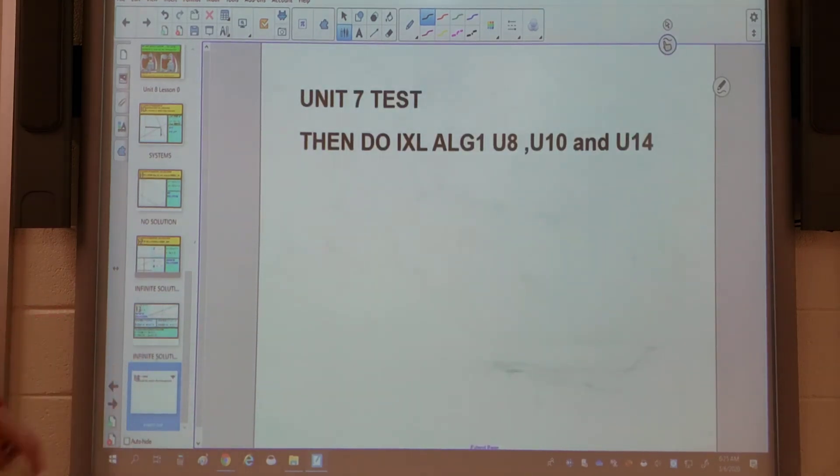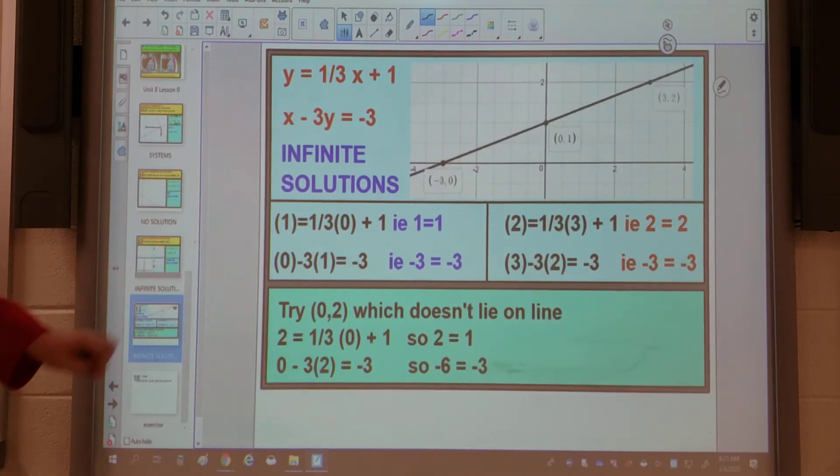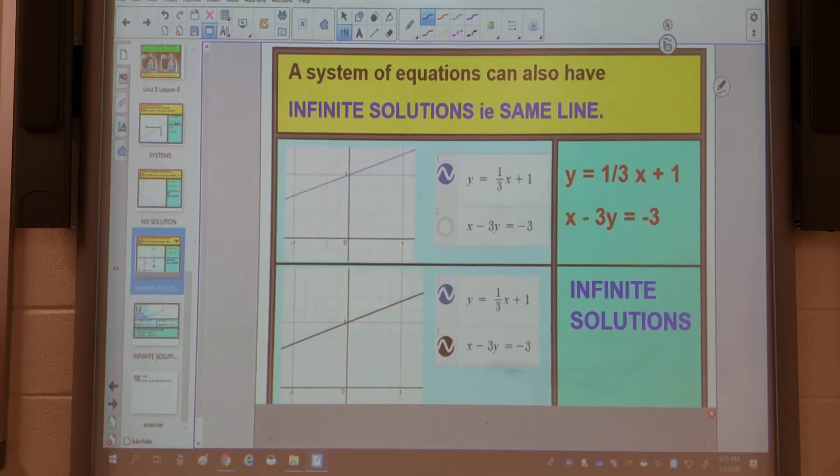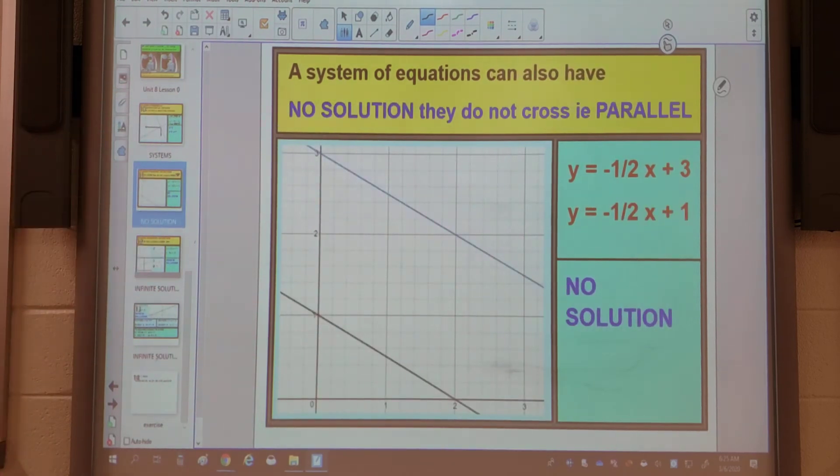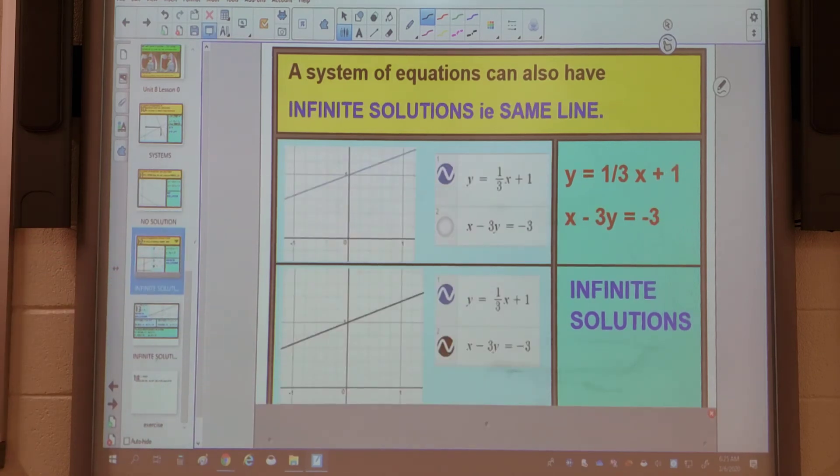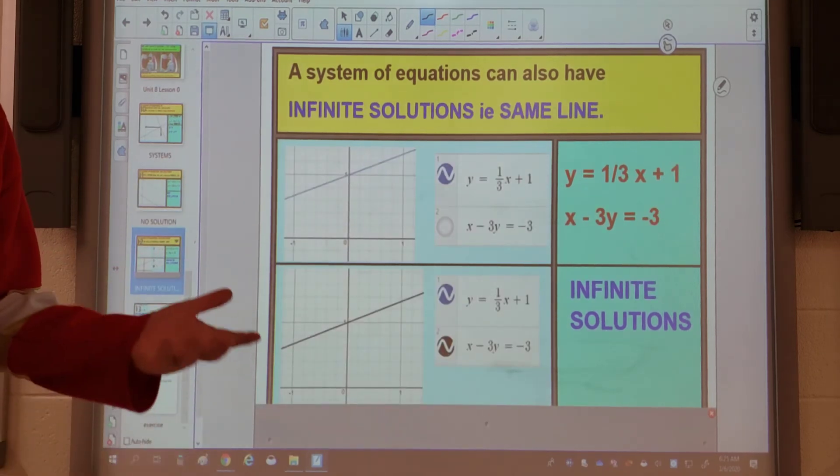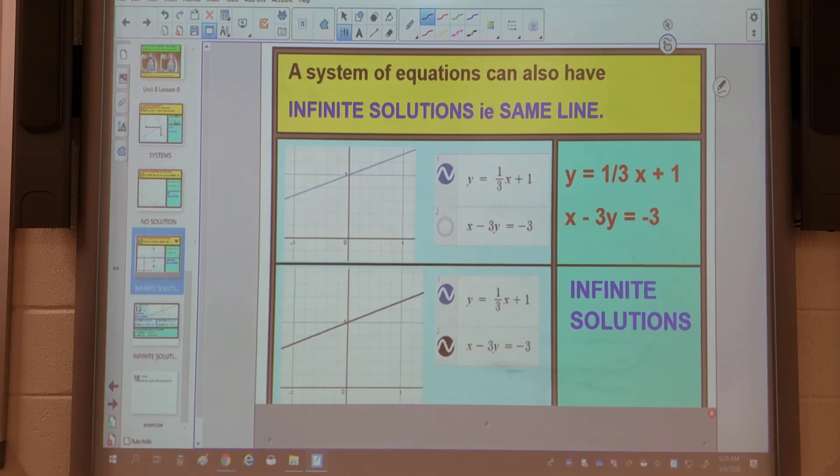Now when you go to do your IXL exercises, and I just clicked on the wrong screen there, you should be also using some of the certain vocabulary words that we use as well. So if you see ones that intersect, which was our first case, you can use the phrase consistent and dependent. If you see the ones where they do not cross, you can use the word inconsistent. And if you see infinite solutions, you can use the phrase consistent and independent, and those words are mentioned on your worksheet, so make sure you look at that as you're doing that exercise.